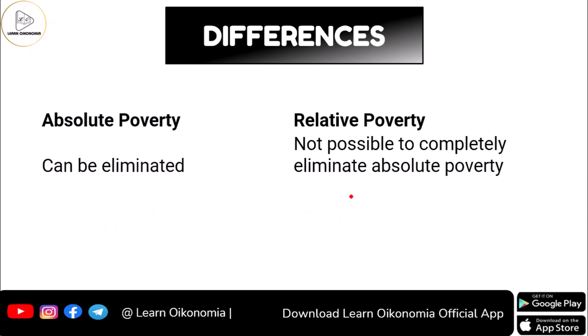Absolute poverty is something that can be eliminated. By increasing the income of the person — for example, by providing employment opportunities — this person will be getting an income level much more than what is required to satisfy their basic needs, so this problem can be solved and the situation of absolute poverty could be eliminated. But when it comes to relative poverty, you cannot eliminate this problem completely.